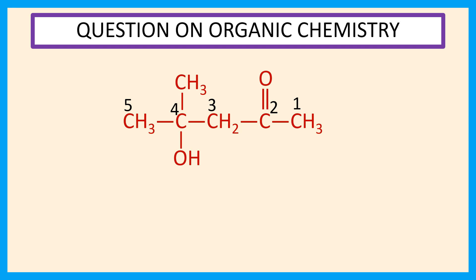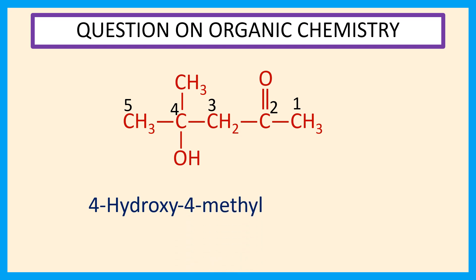One is the hydroxyl group and the other is the methyl group. Since in the English alphabet, H comes before M, we name first: four-hydroxy, then four-methyl. This compound contains five carbon atoms, so the base name is pentan.